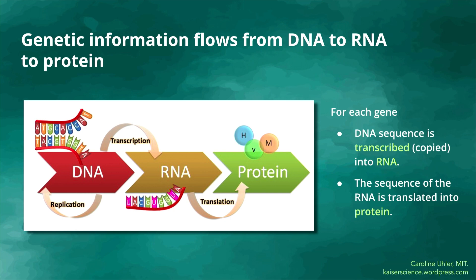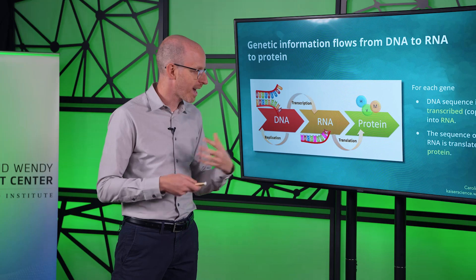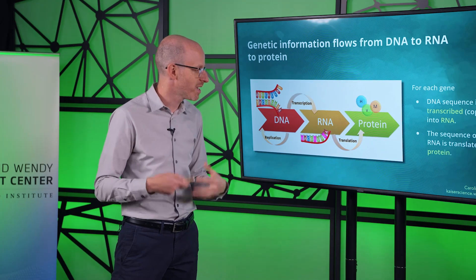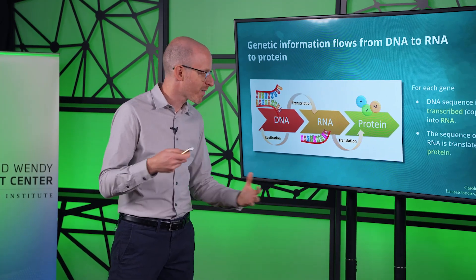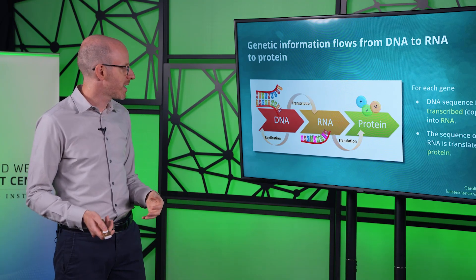Genes are written in the DNA, and then information flows from the DNA to the RNA to the protein. DNA sits in the nucleus of our cells, and then it gets copied or transcribed into an RNA molecule, and then that RNA molecule gets translated into a protein. A protein is a biomolecule that can carry out many functions in cells and tissues — it gives cells structure, it's important for interactions between cells. They're doing almost everything.